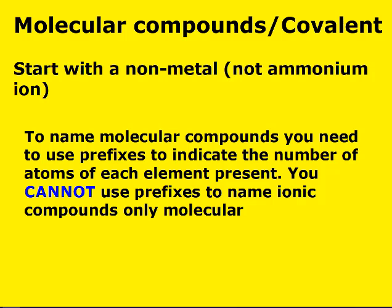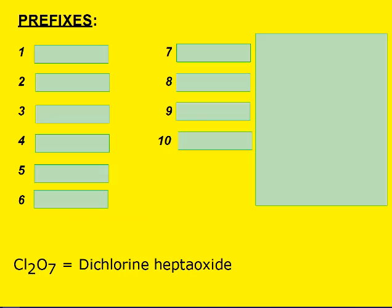Molecular compounds, or covalent compounds, start with a nonmetal — but not the ammonium ion. Molecular compounds are only going to be made up of two elements, and both of them will be nonmetals. To name molecular compounds, you need to use prefixes to indicate the number of atoms of each element present. You cannot use prefixes to name ionic compounds — only molecular. Therefore, if it's molecular, we also do not care about charges, because they're both nonmetals.